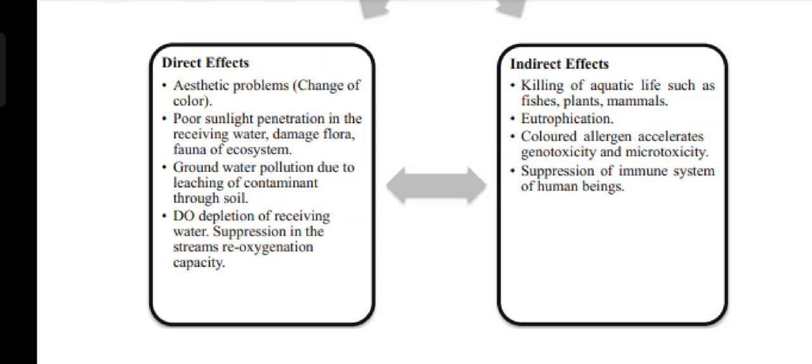The indirect effects include killing of aquatic life, such as species, plants, and mammals, through heavy metals. As mentioned earlier, wastewater contains heavy metals which destroy aquatic life. Then eutrophication, which is the enrichment of nutrients in the water. Colored allergens accelerate genotoxicity and microtoxicity, and suppression of the immune system of human beings.